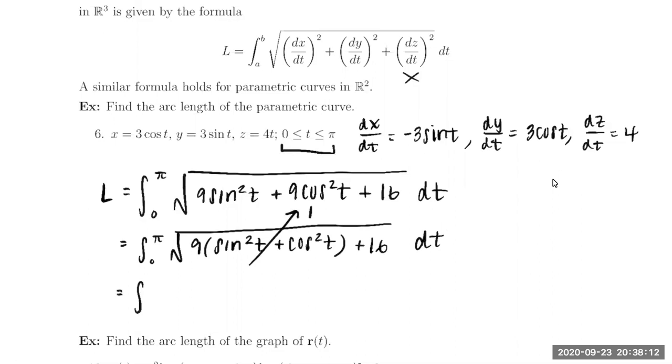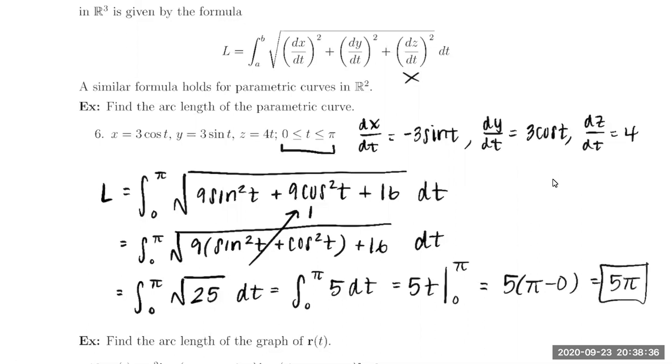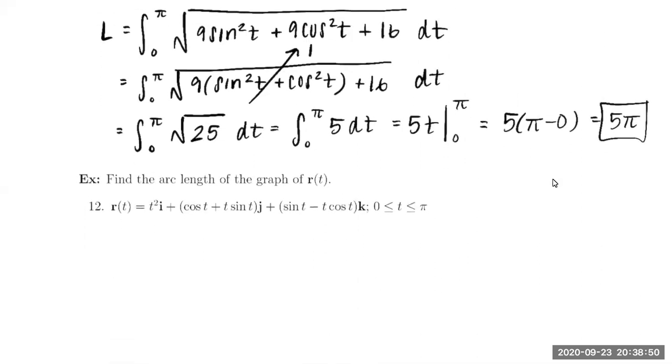And so this integral collapses to the integral from zero to pi of the square root of nine plus 16 or 25. So in other words, I just get the integral of five dt. So this is five t. And then applying the fundamental theorem of calculus, we get five times pi minus zero. And so for this one, we have an arc length of five pi units. So you'll notice whenever we're working with sines and cosines that Pythagorean identity is going to come very handy in order to reduce multiple terms to fewer terms.